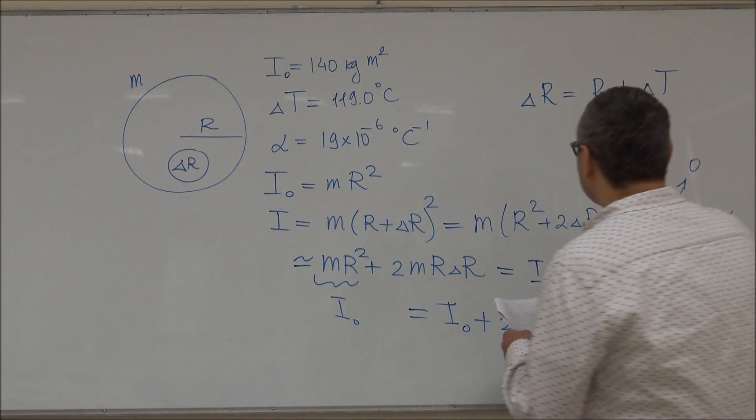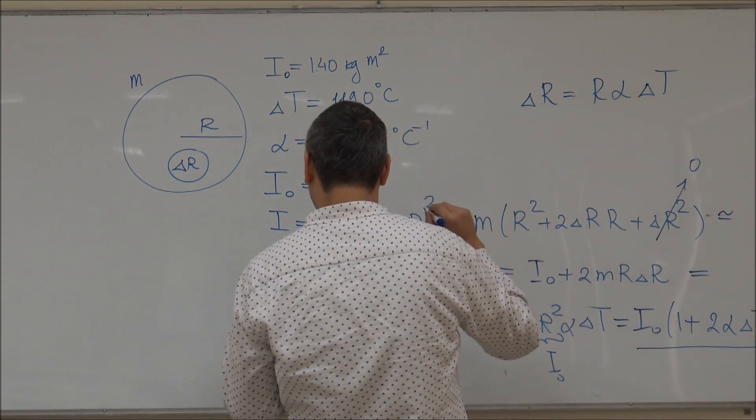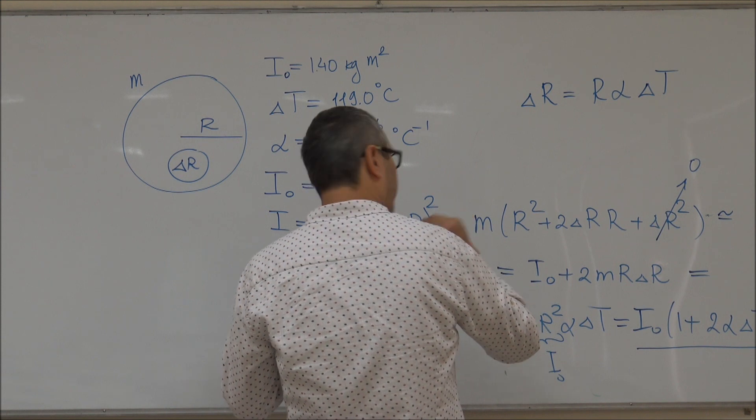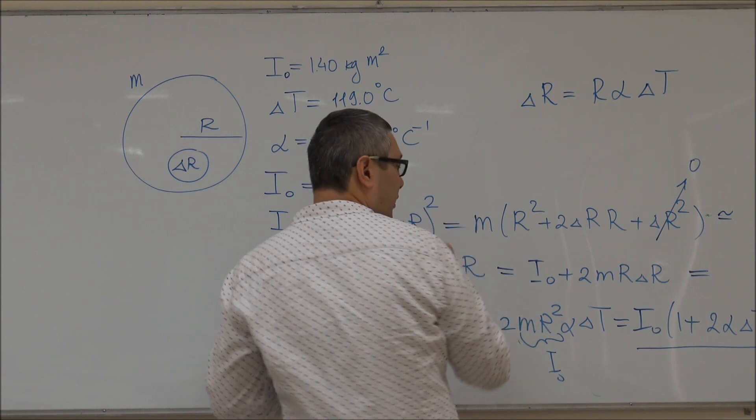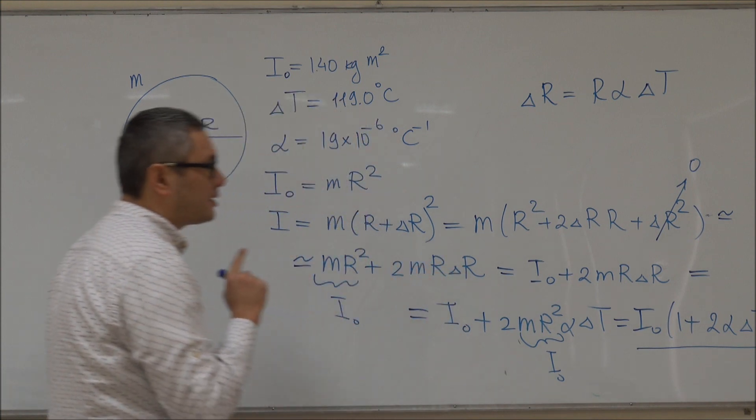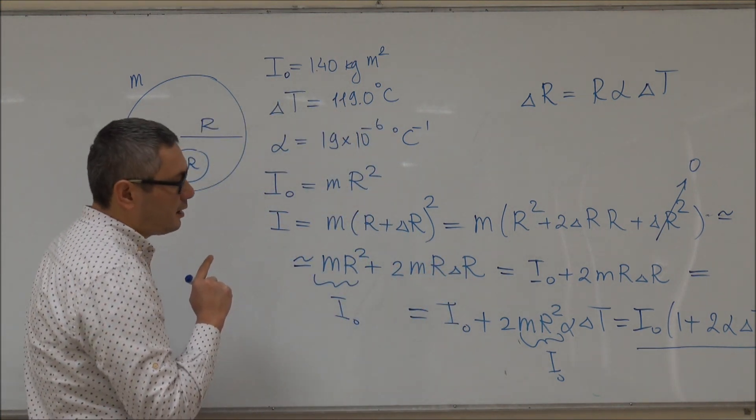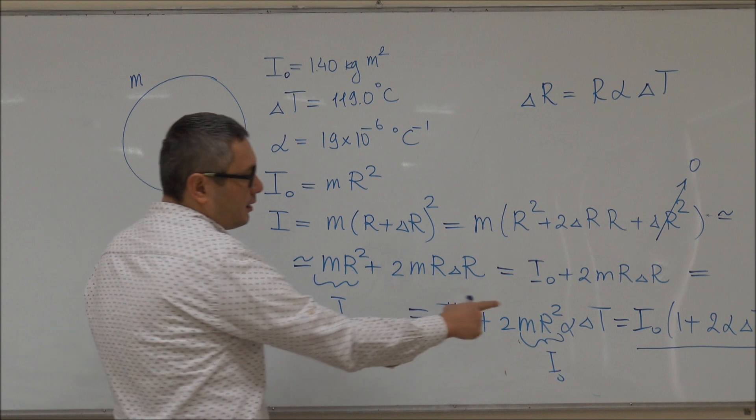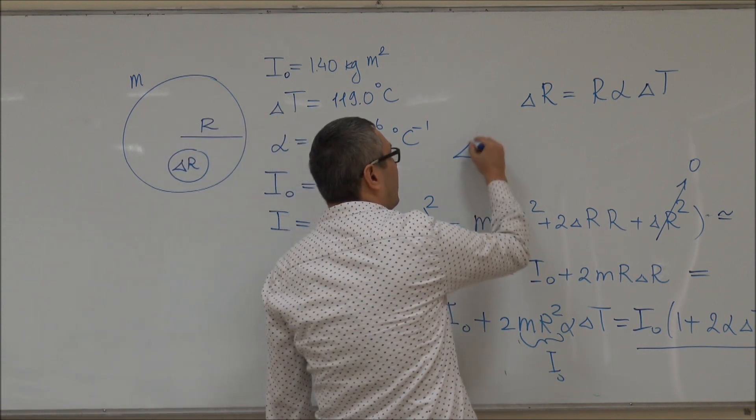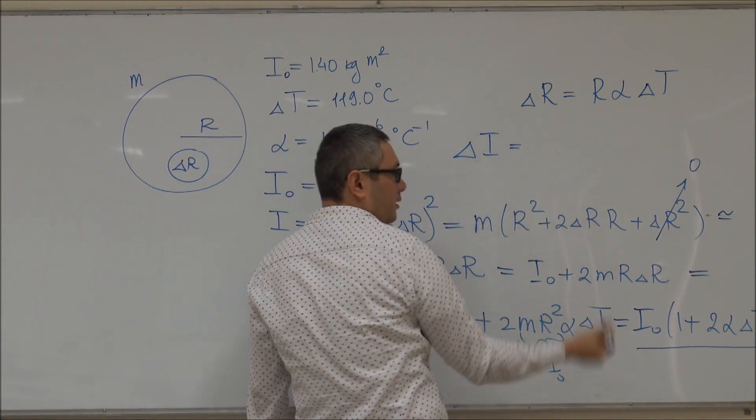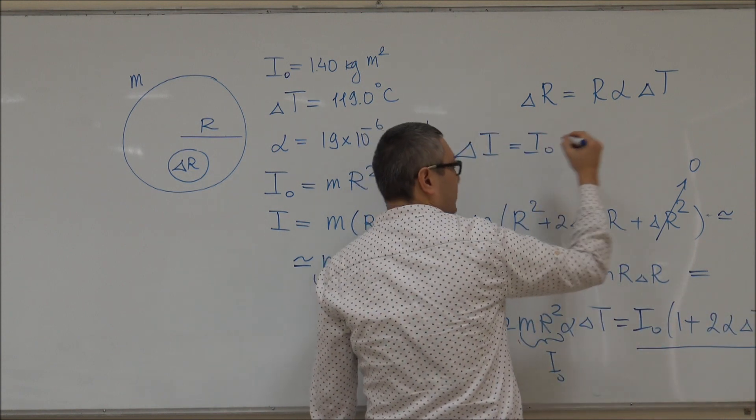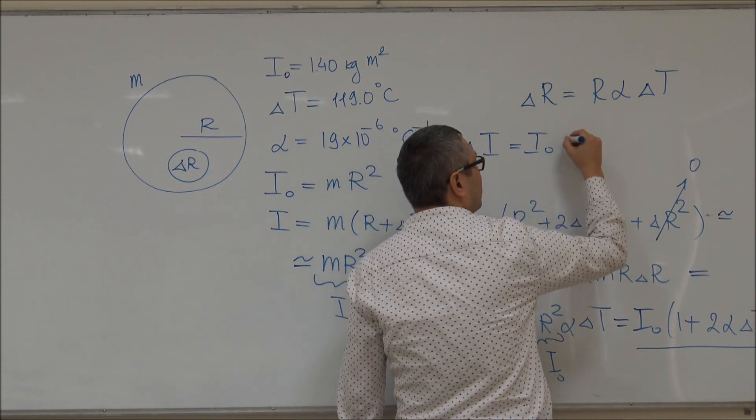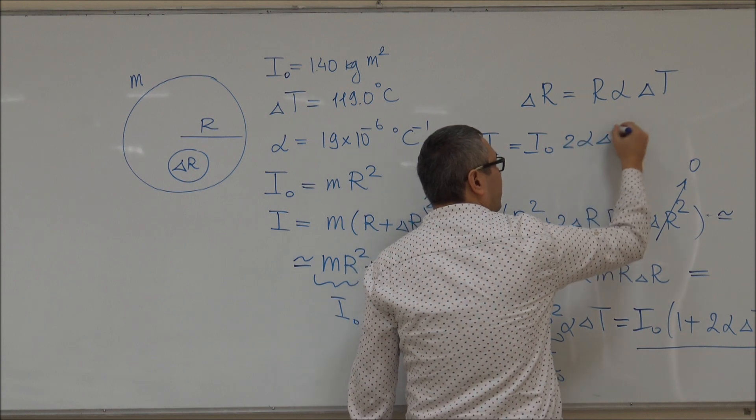So now if you substitute for the numbers, the question is asking for the increase in the moment of inertia. So the increase would be then ΔI. This is the increase. So I₀ times 2αΔT.